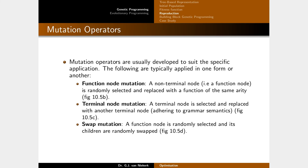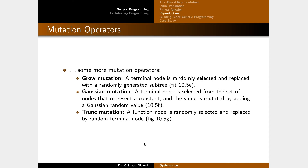Mutation operators are usually developed to suit a specific application. Functional mutation replaces a non-terminal node with another of the same arity — for example, multiplication could be replaced by addition. Terminal node mutation selects a terminal node and replaces it with another terminal node, or modifies its value. Swap mutation randomly selects a function node and randomly swaps its children.